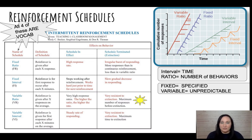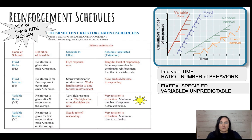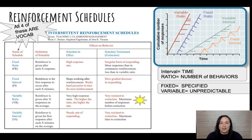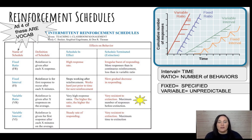Variable ratio is unpredictable and is about number of behaviors — the reinforcer is given after an unpredictable number of responses. Looking at the chart, variable ratio has a very high response rate, meaning it's quickly learned. And it is very resistant to extinction — this is the most resistant to extinction of all schedules, because you don't know how many times you have to perform the behavior before getting the reward. Variable interval is an unpredictable amount of time, which produces a steady rate of responding and is also very resistant to extinction because of that variable factor.